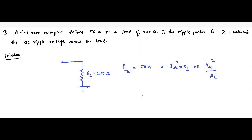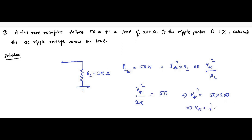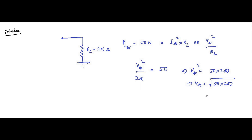Using VDC squared divided by RL: VDC squared divided by 200 ohms equals 50 watts. This implies VDC squared equals 50 into 200, so VDC equals the square root of 50 into 200, which equals 100 volts. That is the DC value of the voltage.